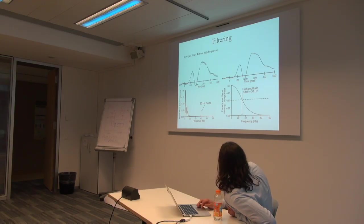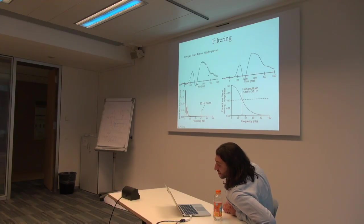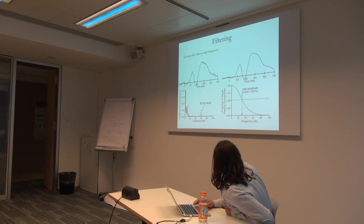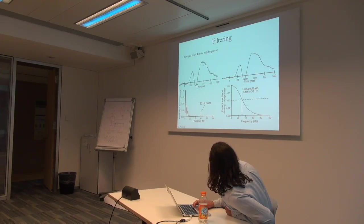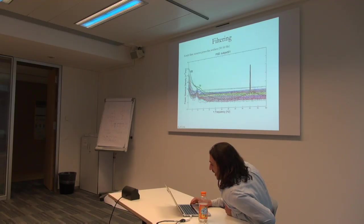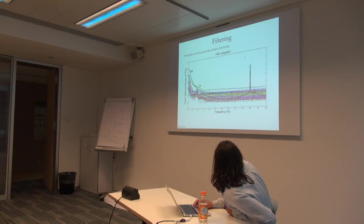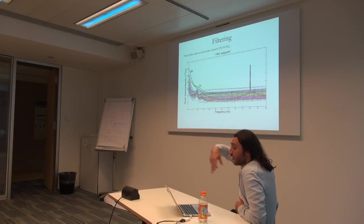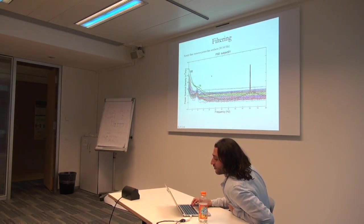Low-pass filters remove high frequencies, which can come from muscle artifacts or power line artifacts. This also helps with better peak detection. Power line noise at 60 Hz is best removed with a notch filter, which targets a specific frequency range — 50 Hz or 60 Hz depending on your country. For example, at our lab in Zurich, train tracks are very close to the EEG lab, adding additional artifacts, which is why we use a Faraday cage.